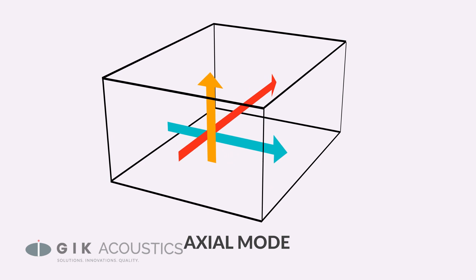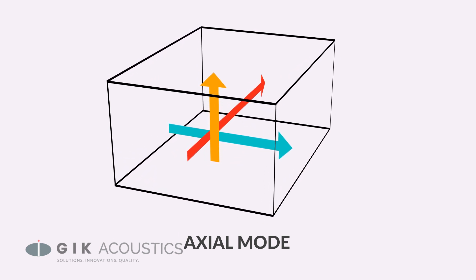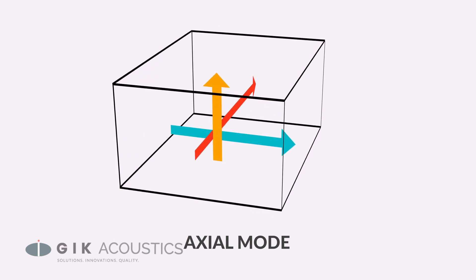Keep in mind that axial room modes don't just occur between parallel walls, but also your floor and ceiling as well. And that's just your axial room modes.